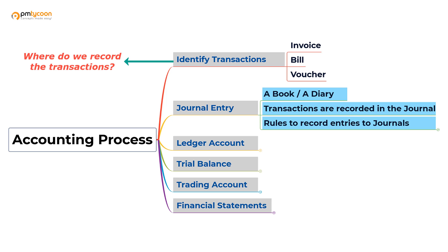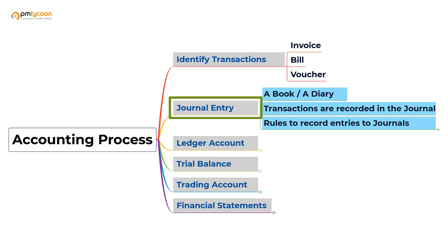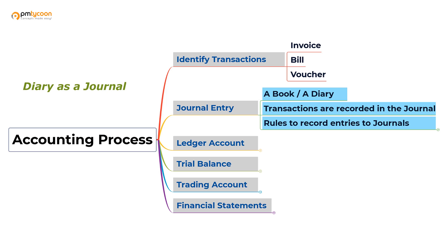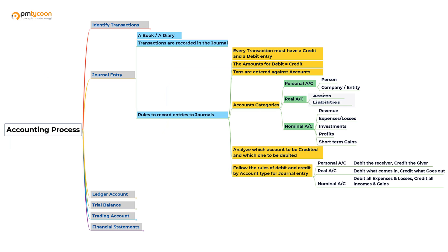The second step is recording transactions. You record these transactions in a book called a journal, and the act of recording is called a journal entry. Journal simply means a diary. In the past, people recorded everything in diaries, which they called journals. Every business financial transaction must be recorded in this business diary. Unlike a personal diary, there is a standard called journal entry standards that must be followed.